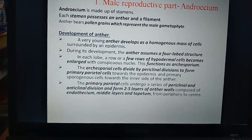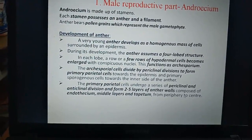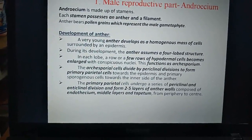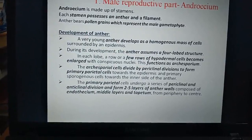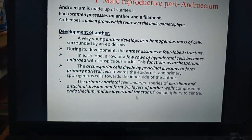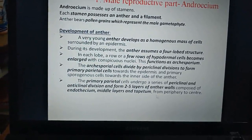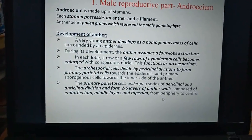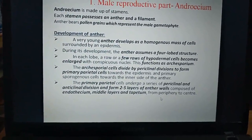The two to five layers of anther walls are composed of endothecium, middle layers, and tapetum, from the periphery to the center.